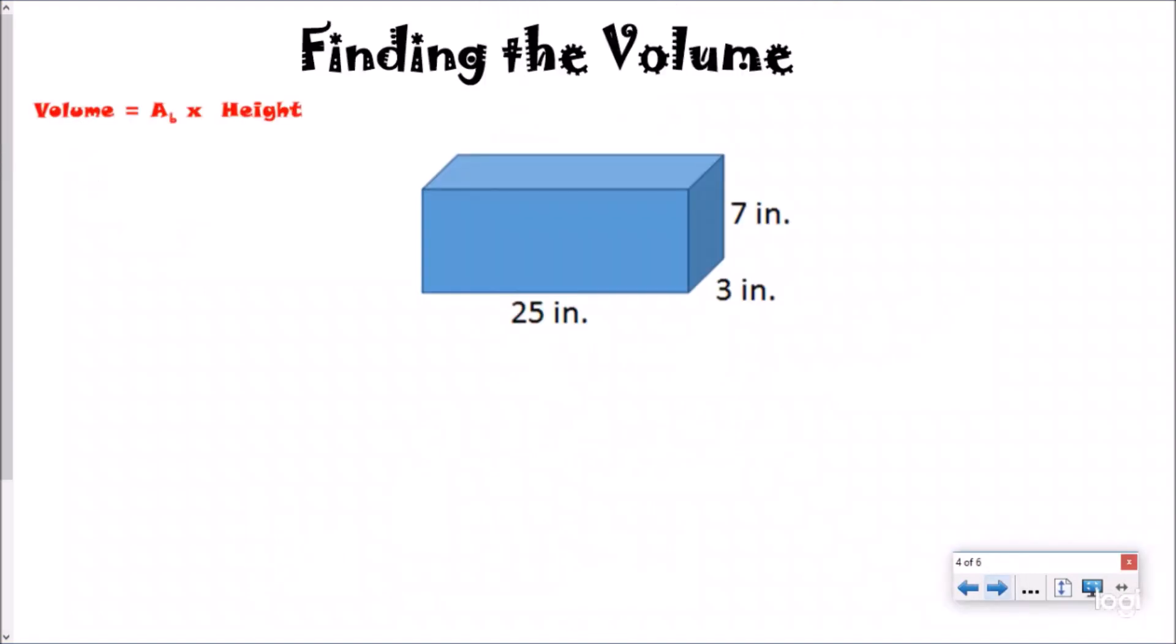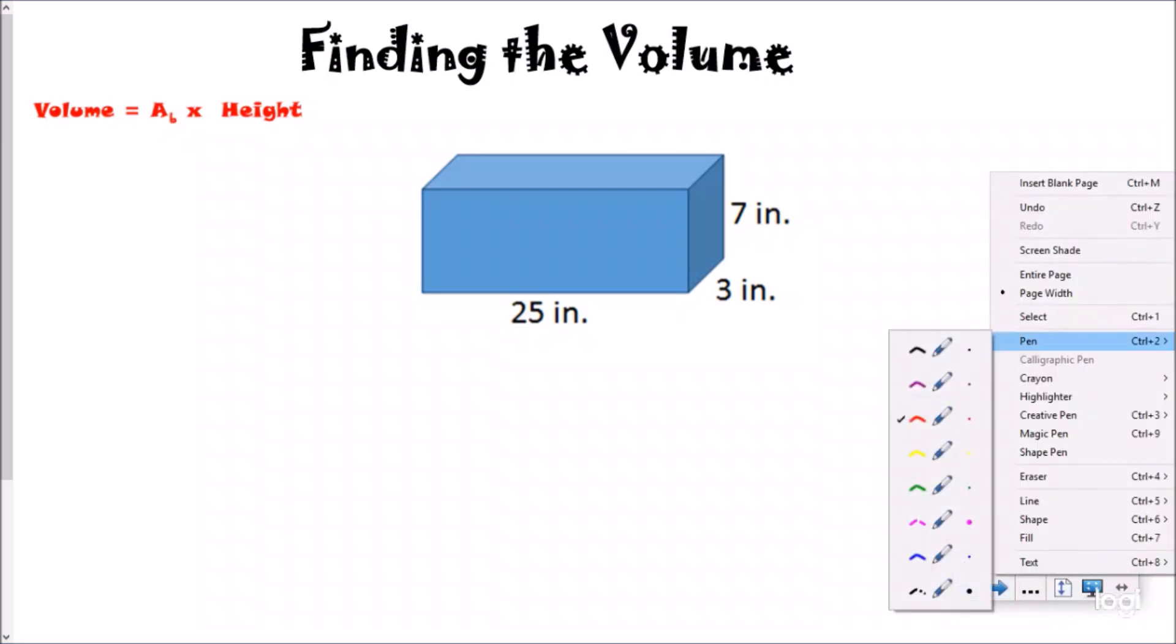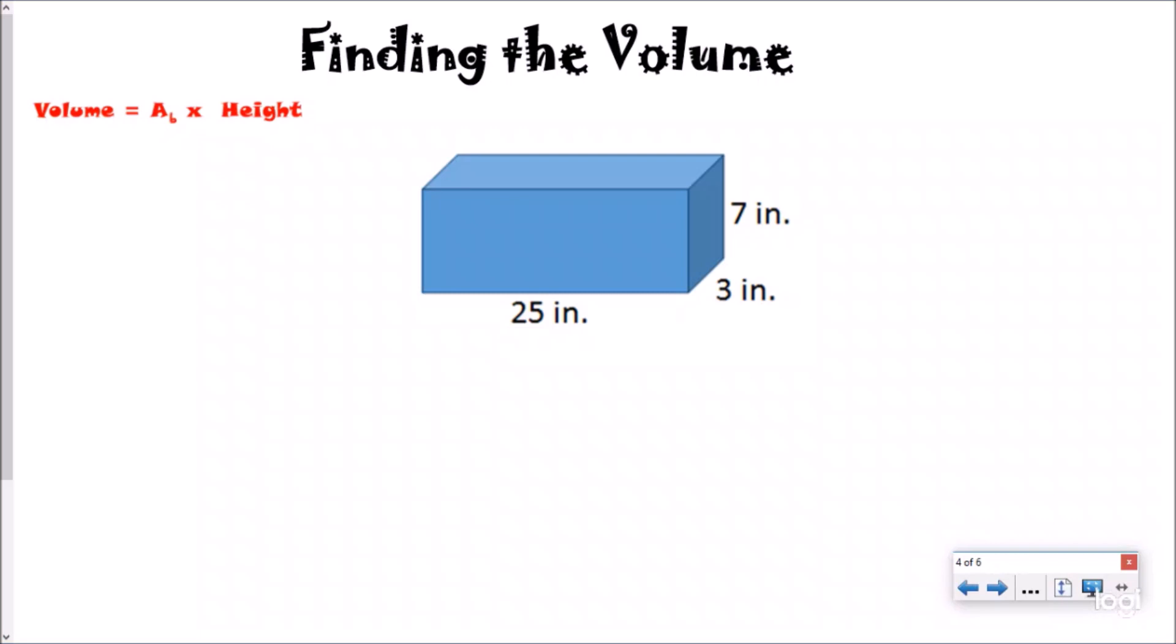So let's look at another example because they don't always just give us the cubes. Let's use our volume formula right here. We want to know the area of the base times the height, obviously, as you can see our formula, except there's no cubes to count. We talked about the area of the base being the same as the area of the top. So I'm going to use 25 as my length and three as my width. I'm going to break this apart into 25 times three. And then how many layers of that do I have? Well, my height right here would be seven. So 25 times three times seven.